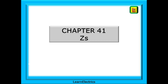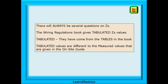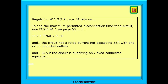Staying with Chapter 41, another big section for exam questions is ZS. Knowing what the maximum permitted ZS is for different circuits and different fuses or breakers is so very fundamental to our trade, and this is reflected by having four or five questions in the exam just on ZS. There will always be several questions on ZS in every exam and you need to know how to answer them. The wiring regulations book gives tabulated ZS values — tabulated means they have come from the tables in the brown book. Tabulated values are different to the measured values given in the amendment to wiring regulations book.